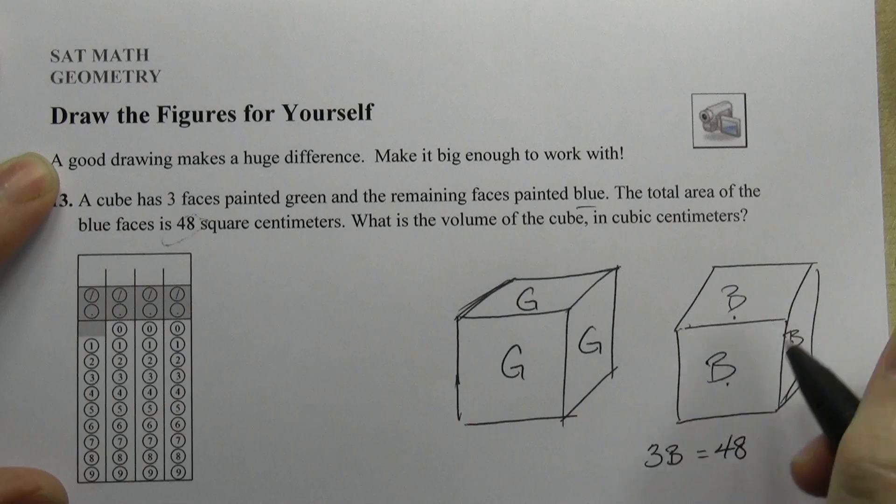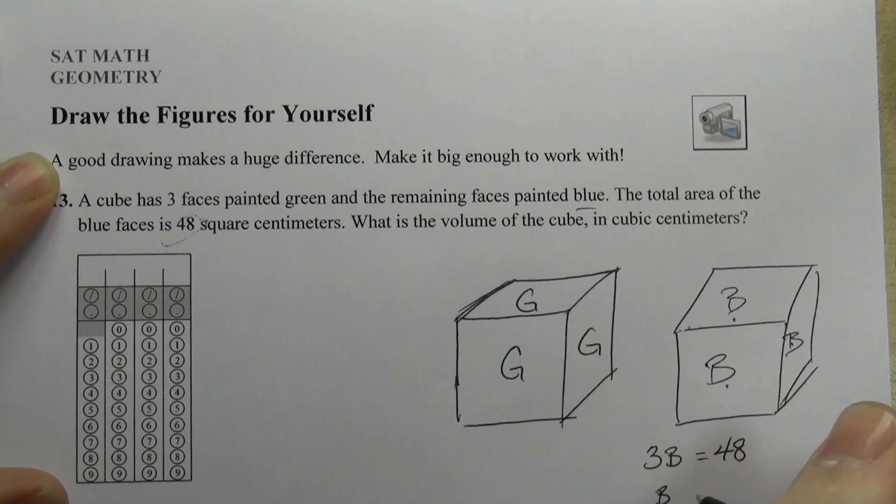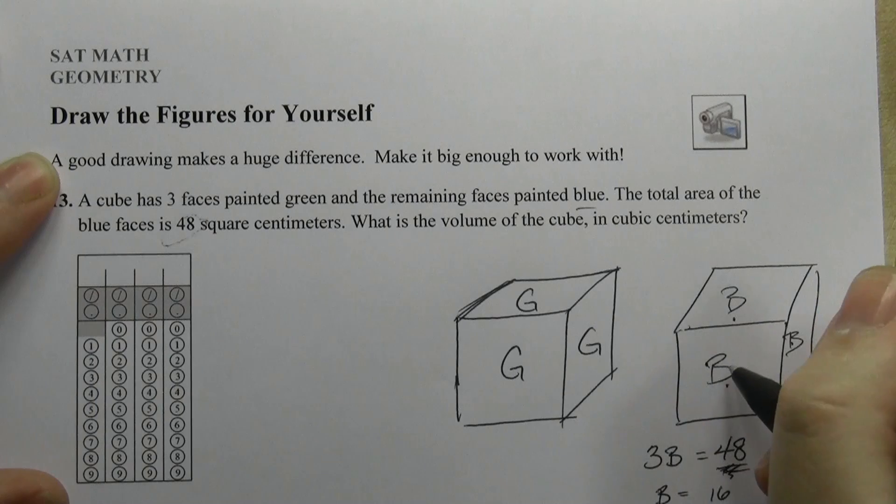So I have three blue faces and total area is 48. They're all the same. It's a cube so they're all squares. So the area of one blue face has got to be 48 divided by 3, which is 16. So I'll start to make progress.